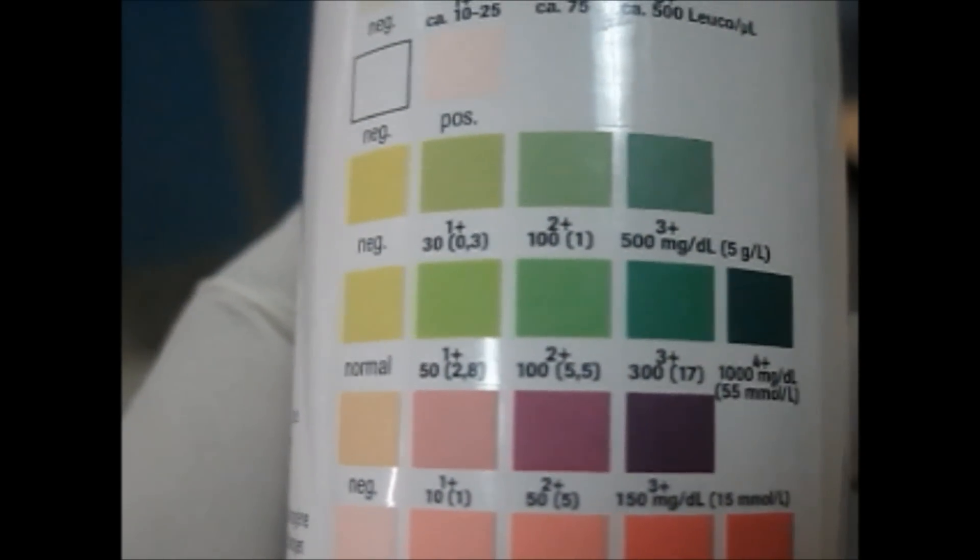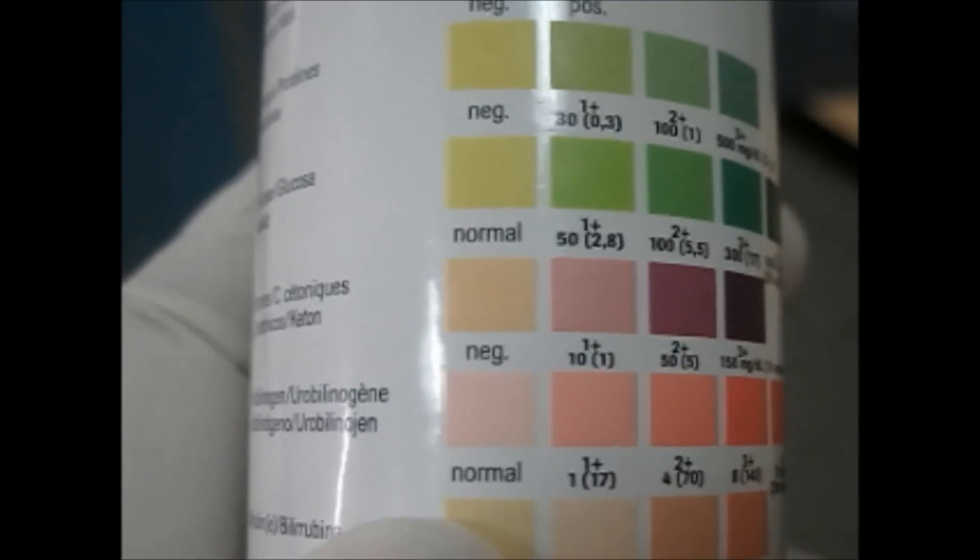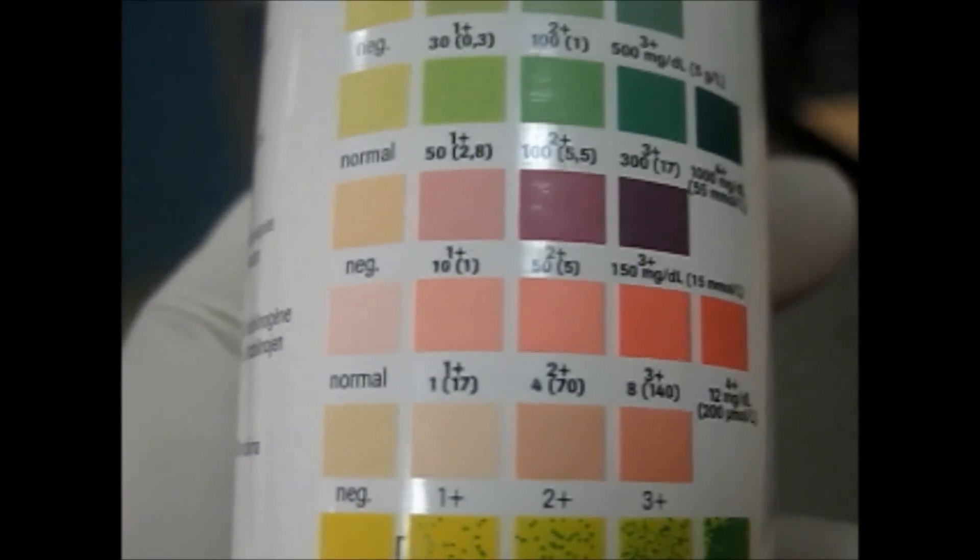You can see for the ketone bodies and the urobilinogen, it's again becoming darker and darker. For bilirubin you can see, and the last one is for blood—you see dotted green, green dots.